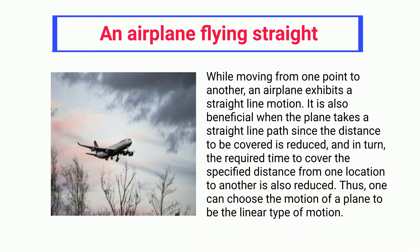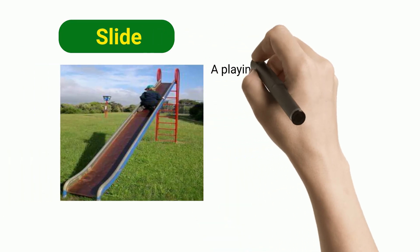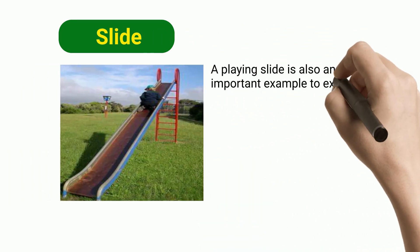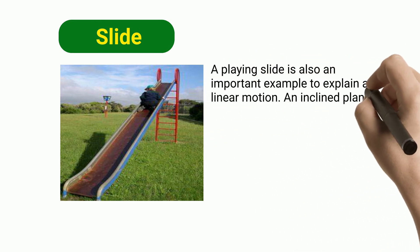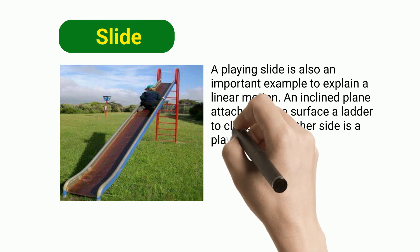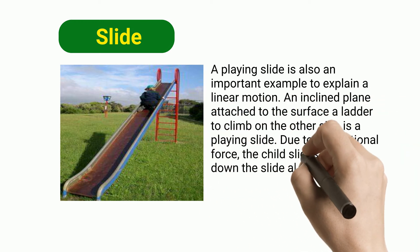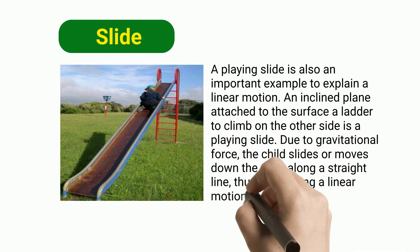Slide: a plane slide is also an important example to explain linear motion. An inclined plane attached to the surface, with a ladder to climb on the other side, is a plane slide. Due to gravitational force, the child slides or moves down the slide along a straight line, thus performing a linear motion.